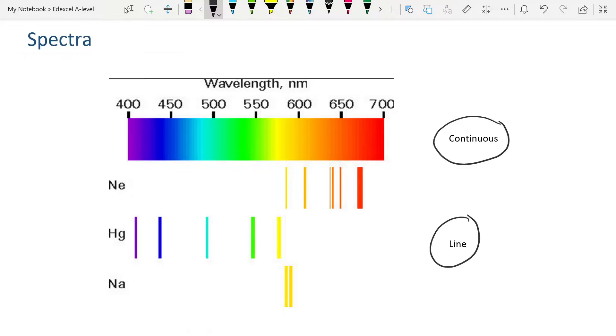The second kind of spectrum that we need to know about are line spectra. These are the particular wavelengths or frequencies of light given out by elements when you transfer energy to their atoms. We can see here we've got neon, mercury and sodium. If you heat these elements, or put them in a tube and put a high voltage across them, that transfers energy to the atoms of the element. We see these particular very discrete frequencies being given out. Each element produces a specific set of lines, its own line spectrum.